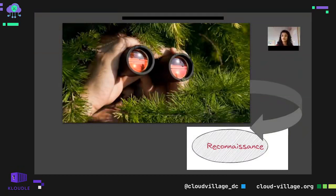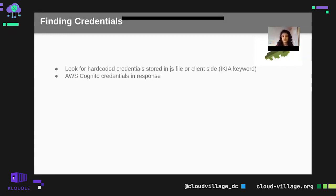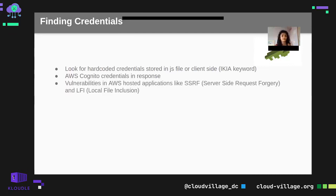To find those attack vectors, you need to perform reconnaissance. I've covered different ways to perform reconnaissance — finding credentials, finding EC2 instances, and finding S3 buckets. For finding credentials: look for hardcoded credentials in JavaScript, AWS Cognito credentials in the response. If a web application hosted on an EC2 instance is vulnerable to SSRF or LFI, attackers can also find those credentials.